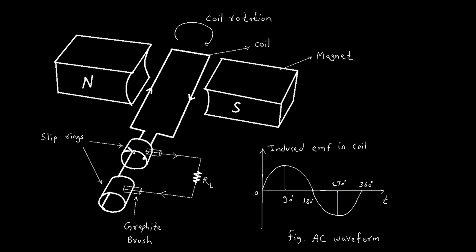As the coil rotates, the magnetic flux through it changes continuously. Imagine the coil starting from a position where it is parallel to the magnetic field lines. In this position, the flux linkage is zero, and thus, no EMF is induced.